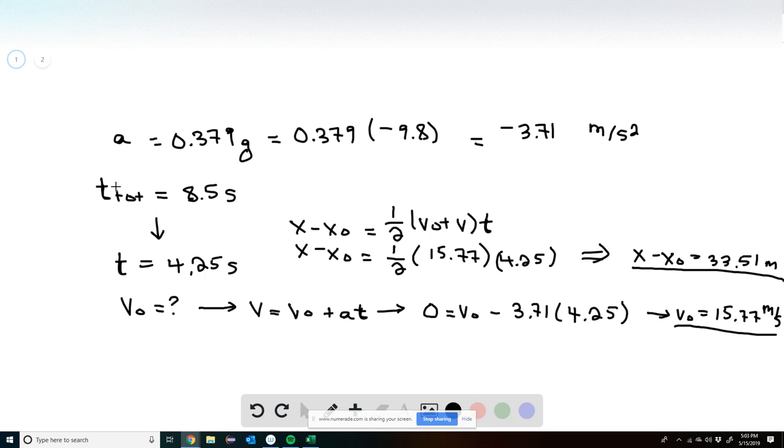We're also told that the time for the object to go all the way up and then all the way down is 8.5 seconds, meaning that the time for the object to go only up is 4.25 seconds, half of the 8.5.